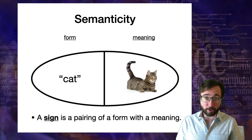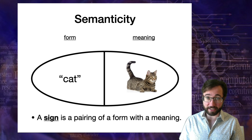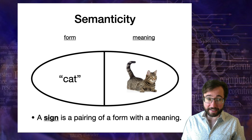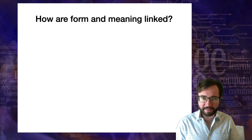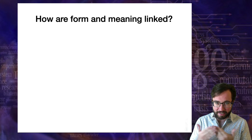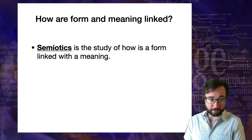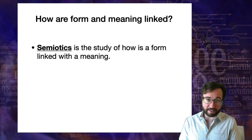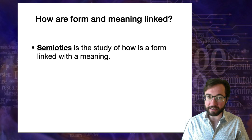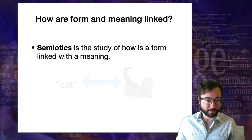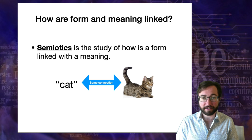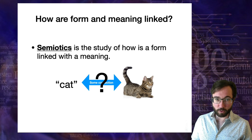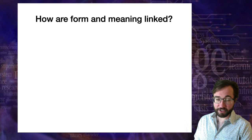When we consider a form and meaning paired together in a shared structure, that is what we call a sign. A sign is a pairing of a form with a meaning. English contains the sign pairing the sound or written form 'cat' with the meaning of this furry creature. The subfield of linguistics that studies how exactly that connection is accomplished is called semiotics — the study of how a form is linked with a meaning. There are essentially three ways in which form can be linked with meaning.